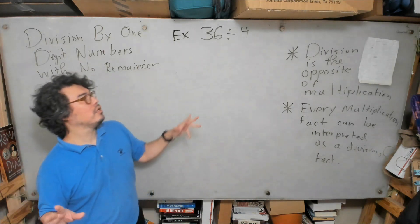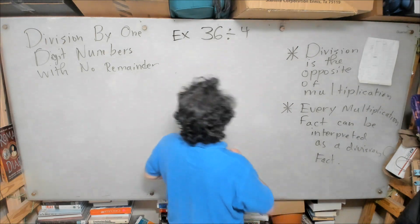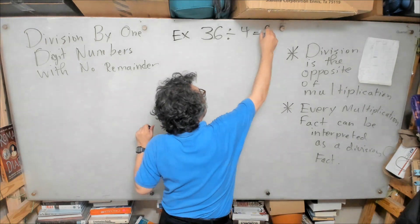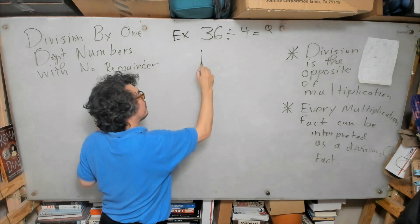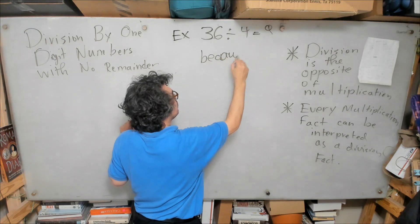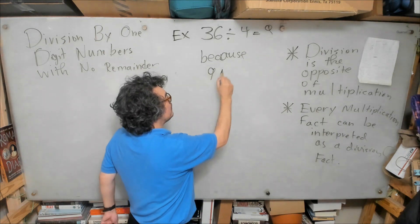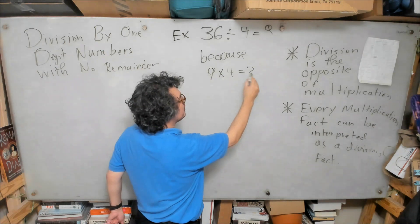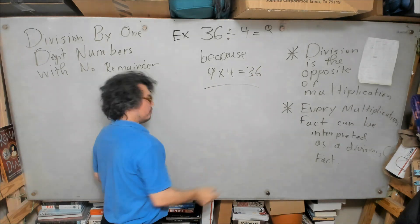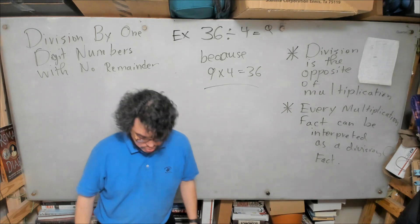36 divided by 4 is equal to 9. Why? Because 9 times 4 is 36.